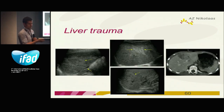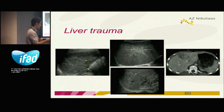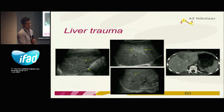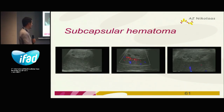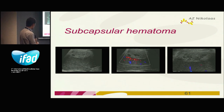Liver trauma — just the same. In the first hours, very subtle changes; sometimes a hyperechoic region. With CT we see it much better. Subcapsular hematomas are easier to appreciate with ultrasound because they have a typical morphology — so that's more easy to appreciate.